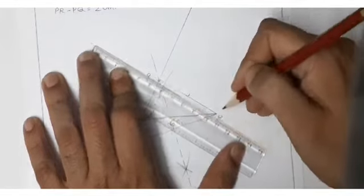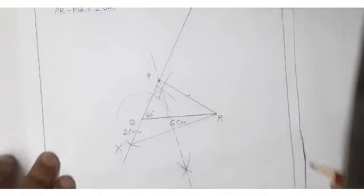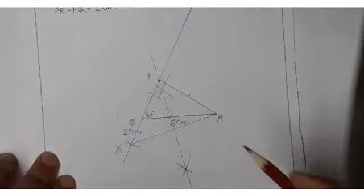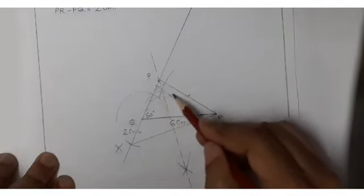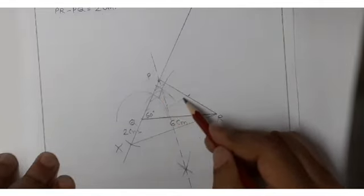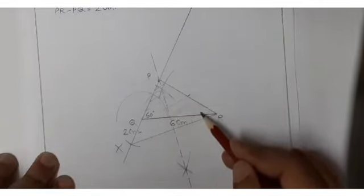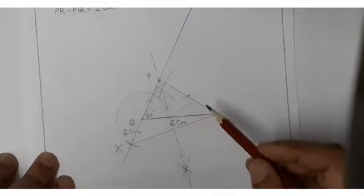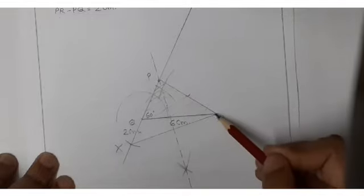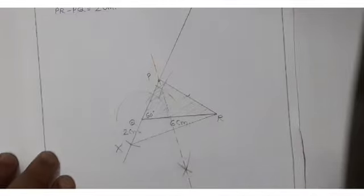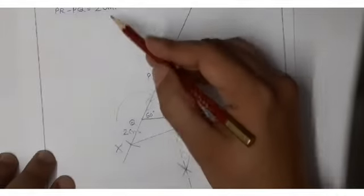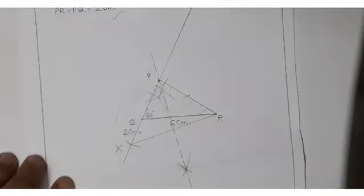Join PR with help of scale to complete triangle PQR. When you measure PR and subtract PQ, you will get 2 centimeter, confirming that PR minus PQ equals 2 centimeter as given. Thank you.